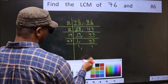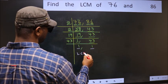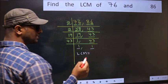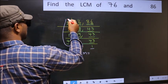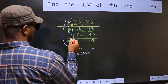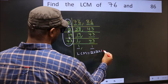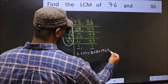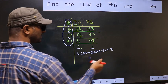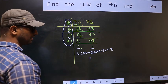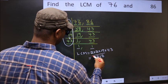So we got 1 in both the places. So our LCM is the product of these numbers, that is 2 into 2 into 19 into 43. When we multiply these numbers, we get 3, 2, 6, 8 as our LCM.